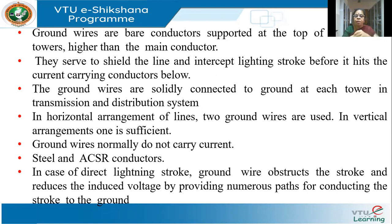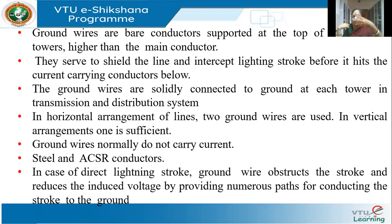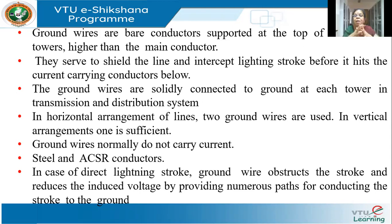This applies both in the transmission system and in the distribution system. Supposing you have a horizontal arrangement of the lines — that means three phases R, Y, B all in a horizontal plane — then the width will be large. Or I can place them vertical, or make it triangular. If horizontal, that will depend on the right of way, how much space you have, and the tower design. If you have a horizontal arrangement, you may need two ground wires, whereas in a vertical arrangement, one ground wire can be placed above all three conductors.